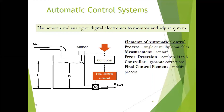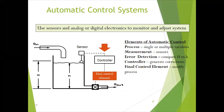The final control element modifies the process so that you get the desired output. Here it can be an actuator connected to a valve, or a DC drive or stepper motor connected to a valve at the outlet — that we term the final control element. So these are the most fundamental components of control systems: process, measurement, error detection, controller, and final control element.